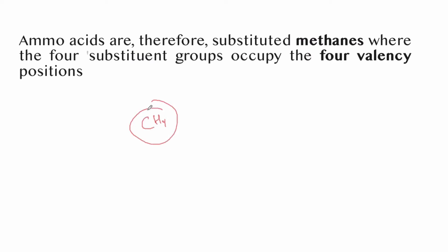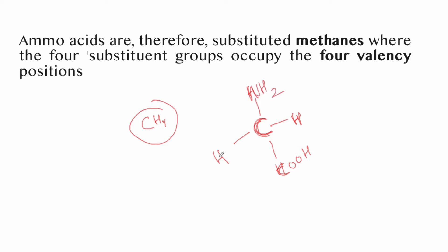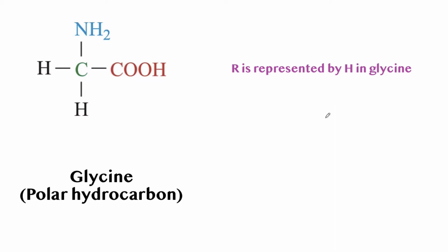Amino acids are substituted methane. Methane is CH4 — carbon is tetravalent, meaning it has four electrons available for covalent bonding. In methane, all four are occupied by hydrogen atoms. Similarly, amino acids have four substituent groups: H, COOH, NH2, and R, occupying the four valency positions.